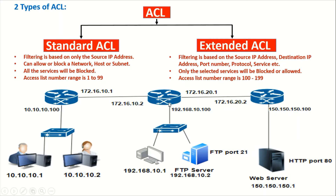If I want to allow access to only this particular user, I can write a standard ACL on this interface saying: permit 10.10.10.2. Whenever traffic comes from this user with source IP address 10.10.10.2, this packet will be processed by the ACL. There is a rule to permit this user, so the traffic will be allowed to pass and the user can access the FTP server.